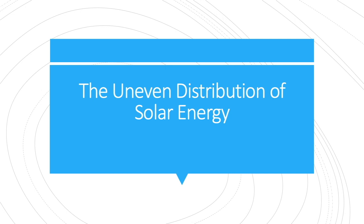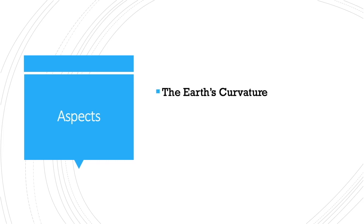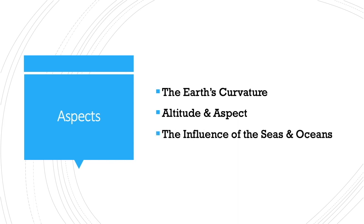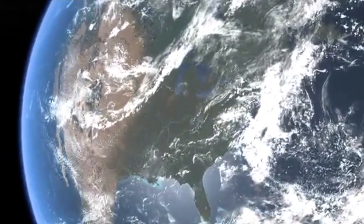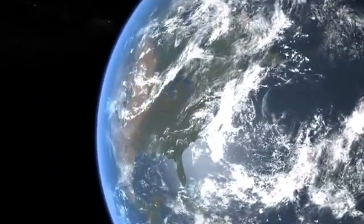So that's how we explain the uneven distribution of solar energy around our globe. We looked at the effect of the earth's curvature on the distribution of solar energy, then at how altitude and aspect play a major role in the uneven distribution, and finally at the sea and its important influence on the distribution of solar energy around our globe.